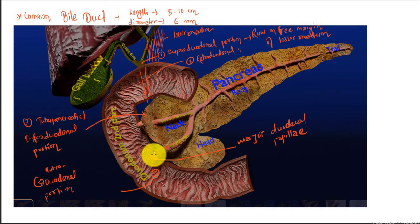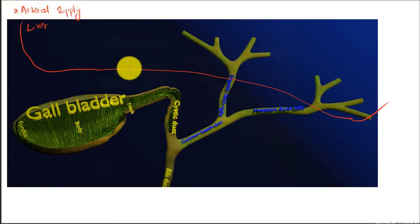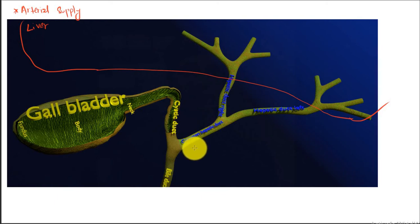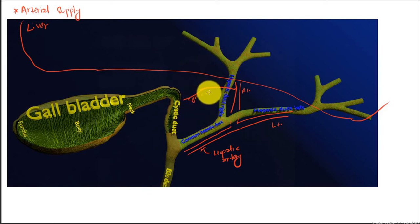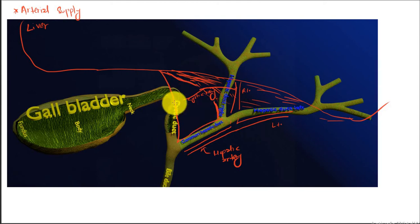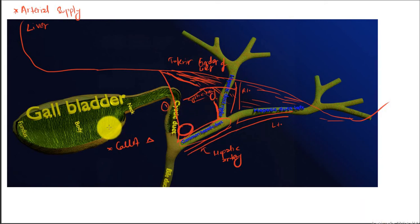The intraduodenal portion is surrounded by a sphincter known as the sphincter of Oddi, which opens during the contraction of the gallbladder. Regarding arterial supply, we have the hepatic artery along with the common hepatic duct, and the right and left branches of the hepatic artery. The right branch gives rise to the cystic artery, which supplies the gallbladder and lies within a triangle formed by the cystic duct, common hepatic duct, and the inferior border of the liver.